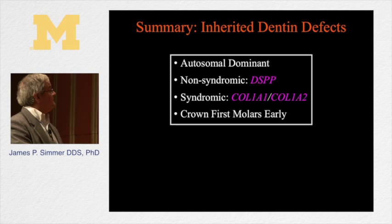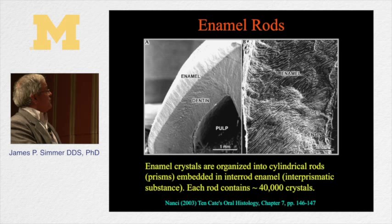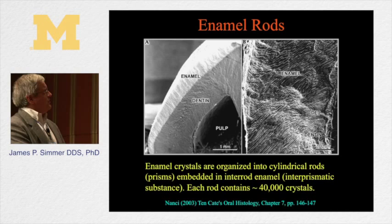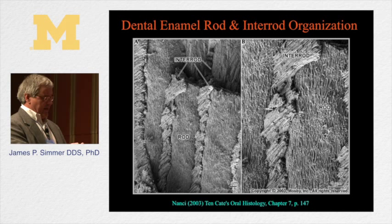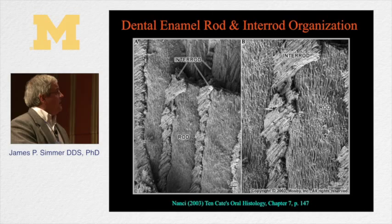For the remainder of the time I'm going to talk about dental enamel defects. The enamel layer of the teeth is comprised of enamel rods, which are hydroxyapatite crystals bundled into rod-like structures. At higher magnification, single rods contain about 40,000 individual crystallites running parallel along the length of the rods. There is also interrod enamel comprised of these same kinds of crystallites.